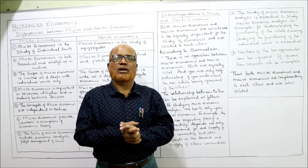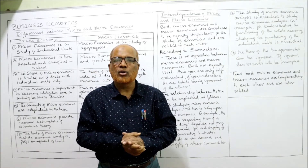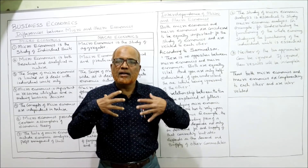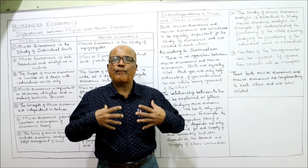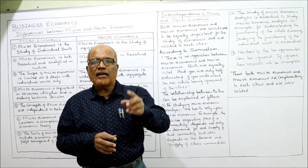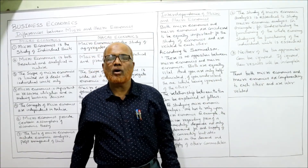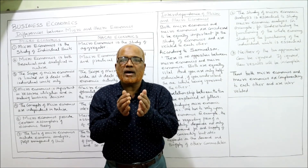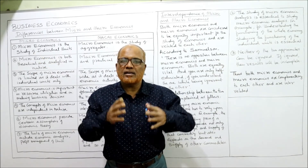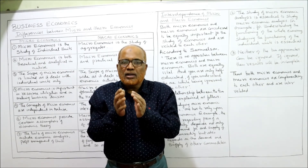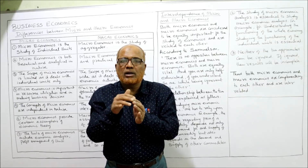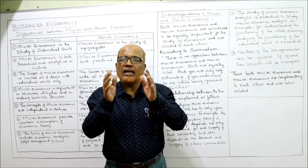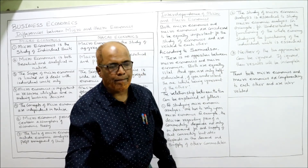We are not the only producer or supplier — many competitors exist. The demand for our product also depends on the supply and price of competitors. We are only a part of the market, which contains many companies and firms. So the decisions we take also depend on decisions taken by competitors. That is why a firm must have knowledge about both micro and macro economics.